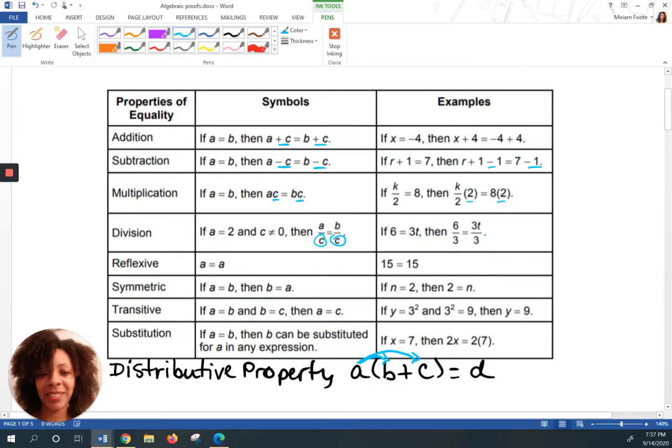Reflexive is like if you're looking in the mirror, you see yourself. It's the exact same thing. Same thing here. A is equal to A. With numbers, 15 is 15. So both sides of the equation are going to be equal. That's called reflexive.